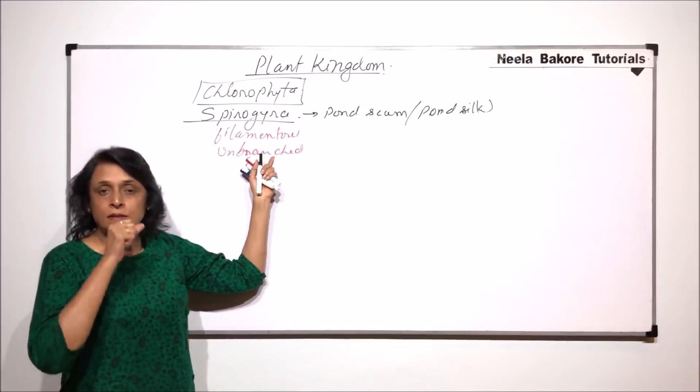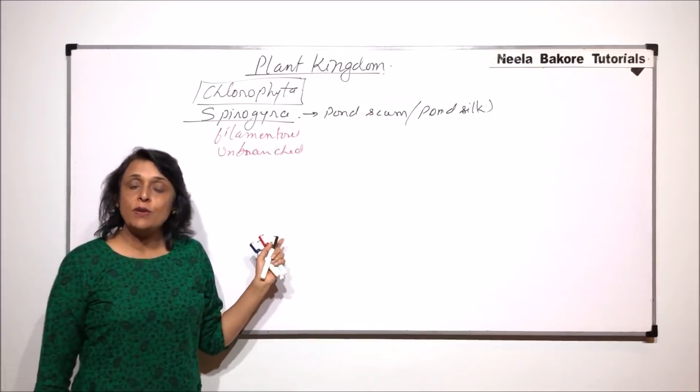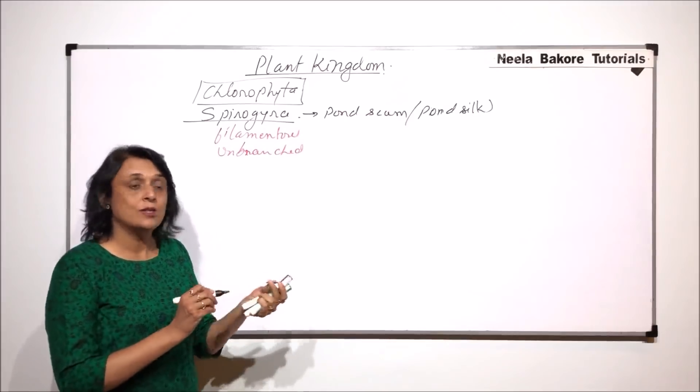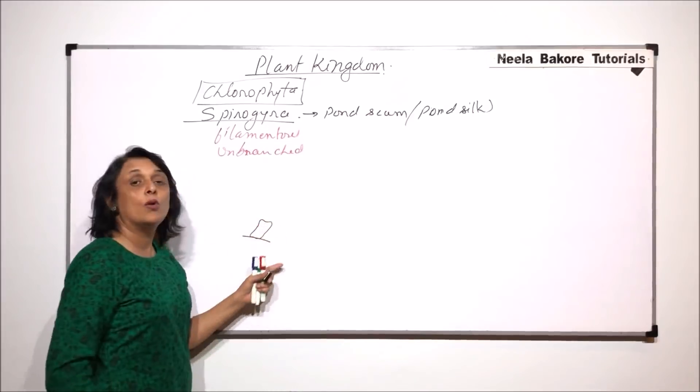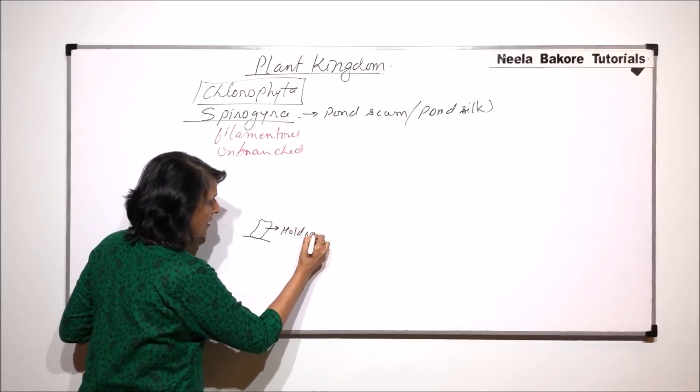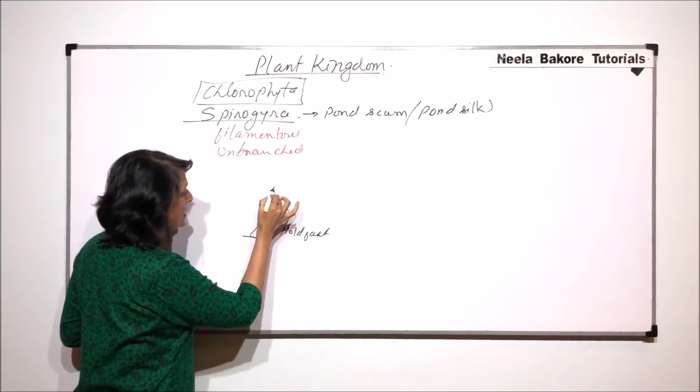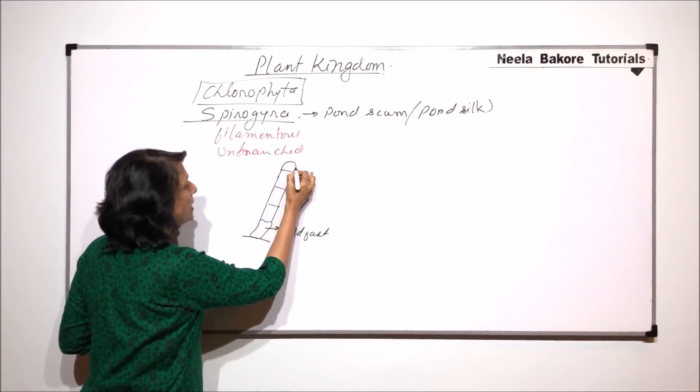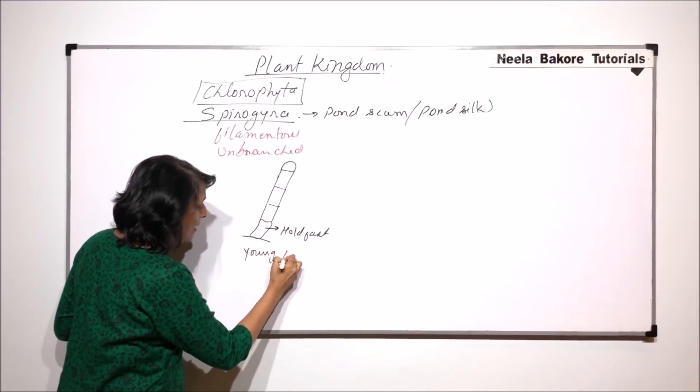When the Spirogyra filament is young, it normally remains attached to a substratum. The lowermost cell is non-green and is called the holdfast. The other cells are elongated except for the top cell which is dome-shaped. This is seen in case of a young filament.